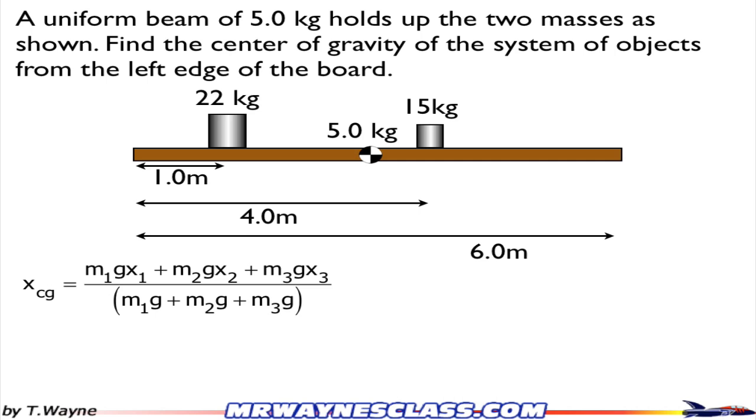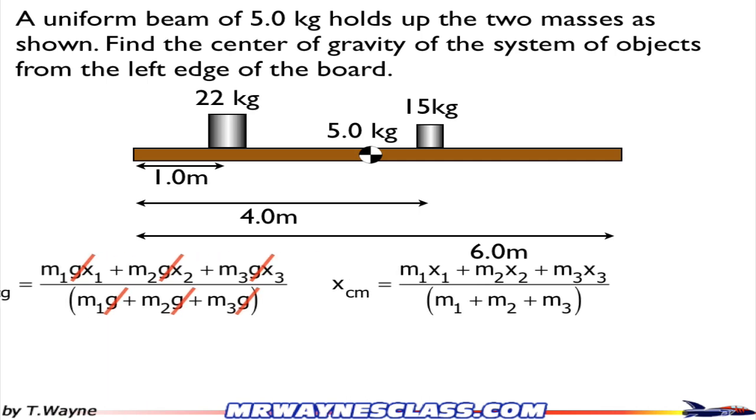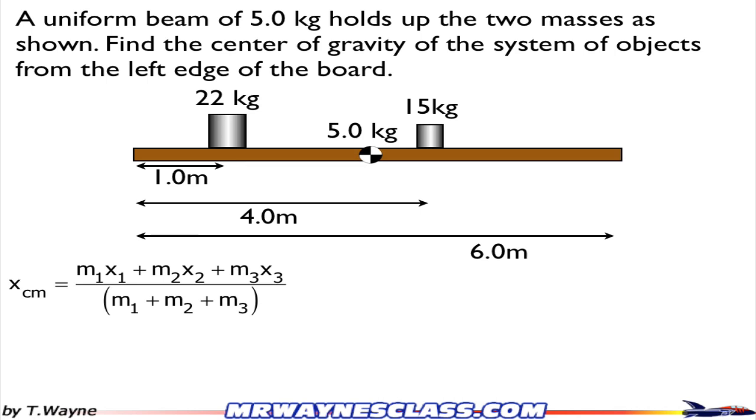Well, there's a g in all these weights because weight is equal to mass times gravity, and as that turns out, the g's go away. So because gravity is uniform for every problem that we're going to do, that means that the center of gravity is the same location as the center of mass. So the equation simplifies to just the mass times the distance instead of the weight times the distance.